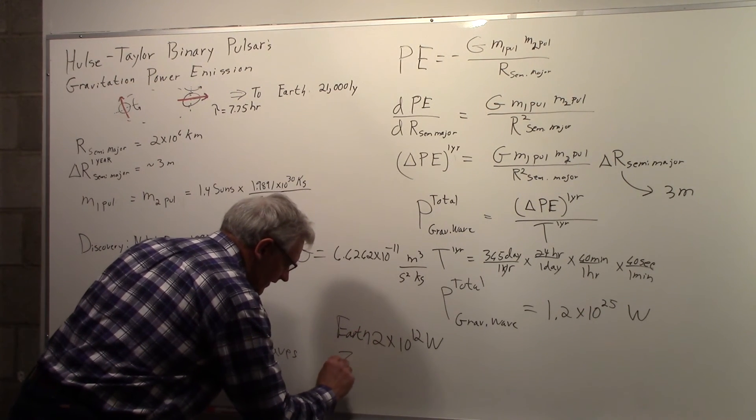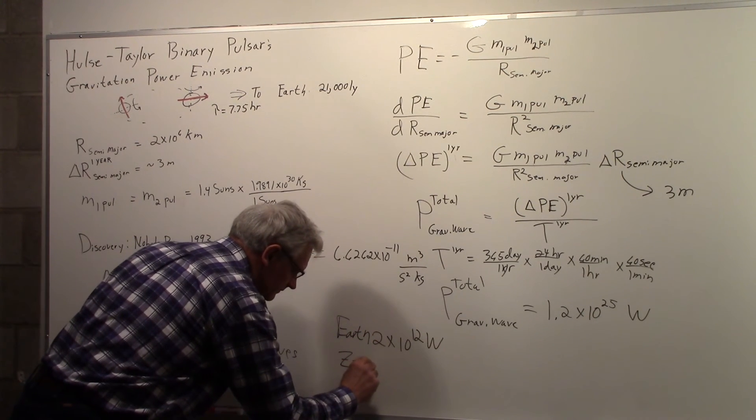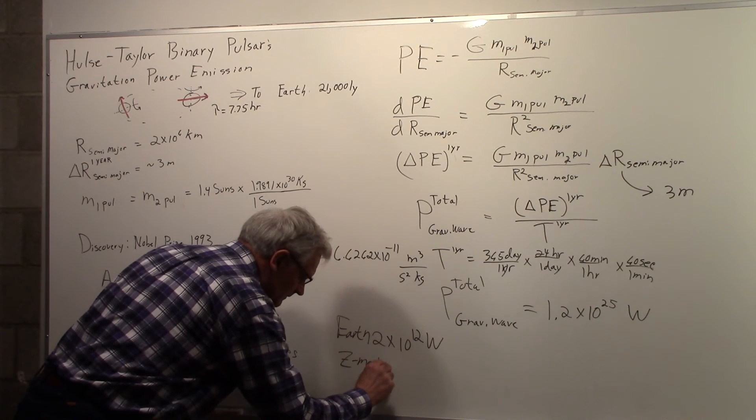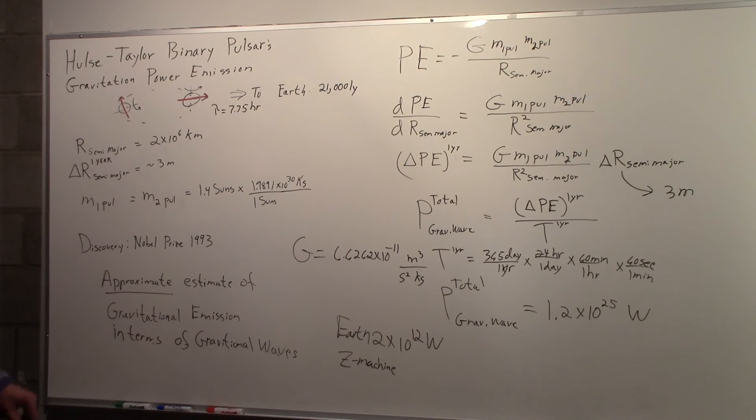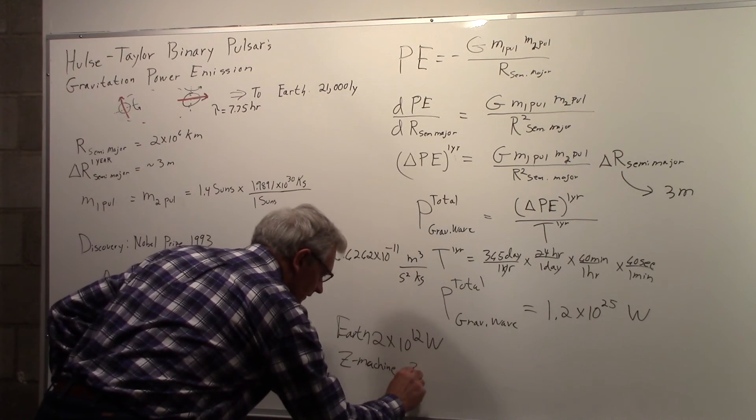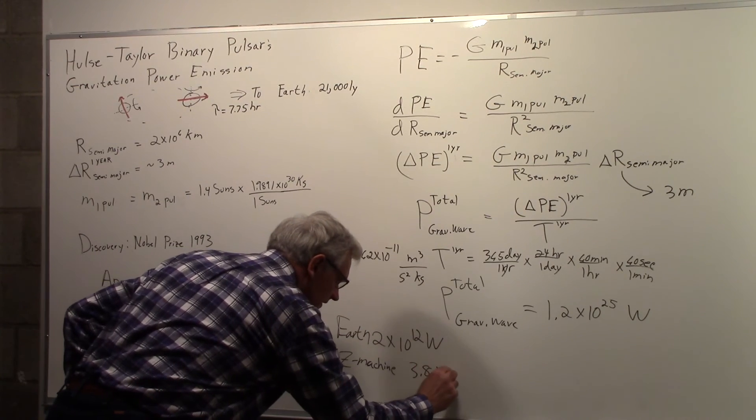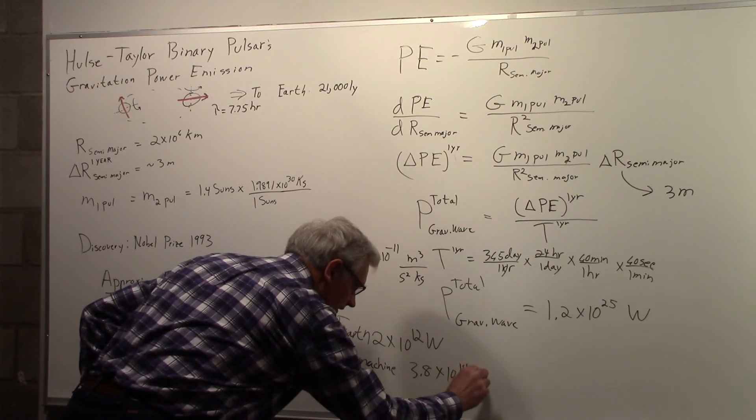And the famous Z machine, that puts out, for a very short time, the power that it puts out is something like 3.8 times 10 to the 14 watts.